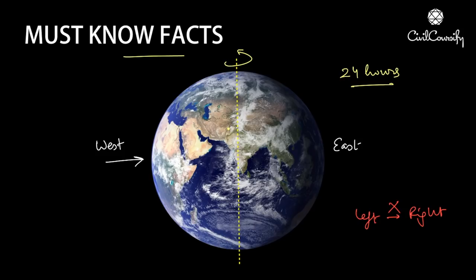Now we come to the Coriolis force. What exactly is it? It is the force experienced due to the rotation of the Earth on its own axis, and this force is experienced by living and non-living organisms on the planet, on the surface of the planet, and also by air masses, clouds, etc. in the atmosphere. Since the Earth is rotating from west to east, the Coriolis force would also be in this direction — from west to east.